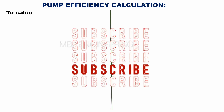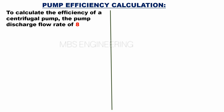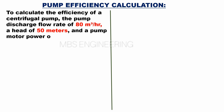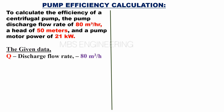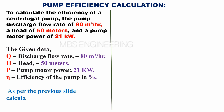We will now calculate the efficiency of the centrifugal pump. Given: pump discharge flow rate of 80 cubic meters per hour, a head of 50 meters, and a pump motor power of 21 kilowatts. Eta is the efficiency of the pump in percent. As per the previous slide calculation, brake kilowatts is 14 kilowatts.